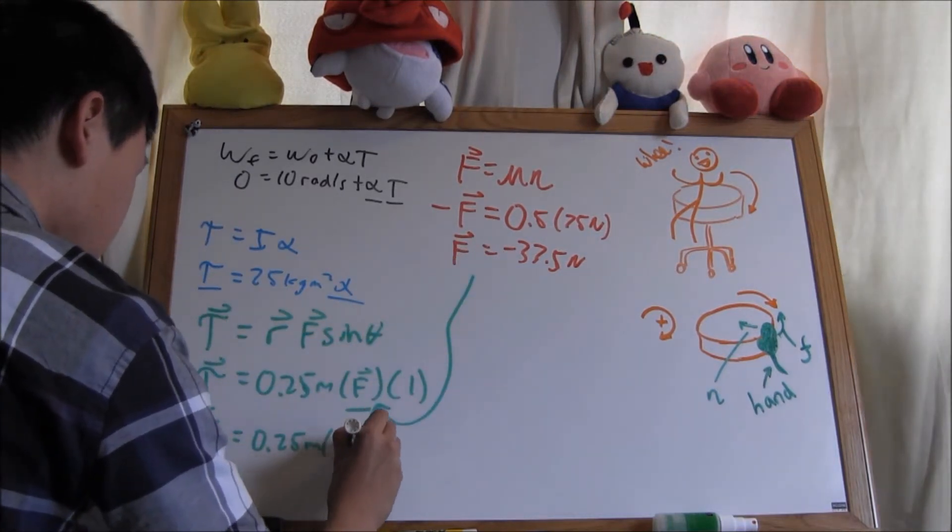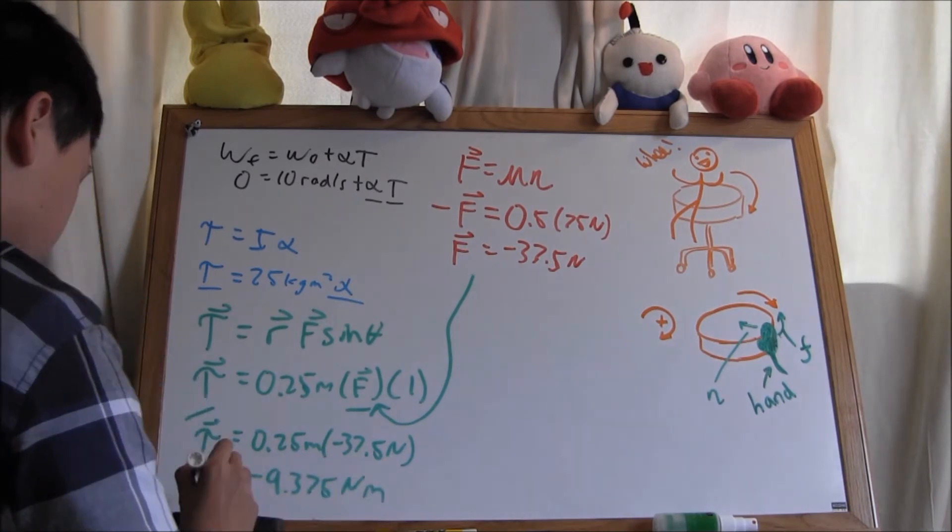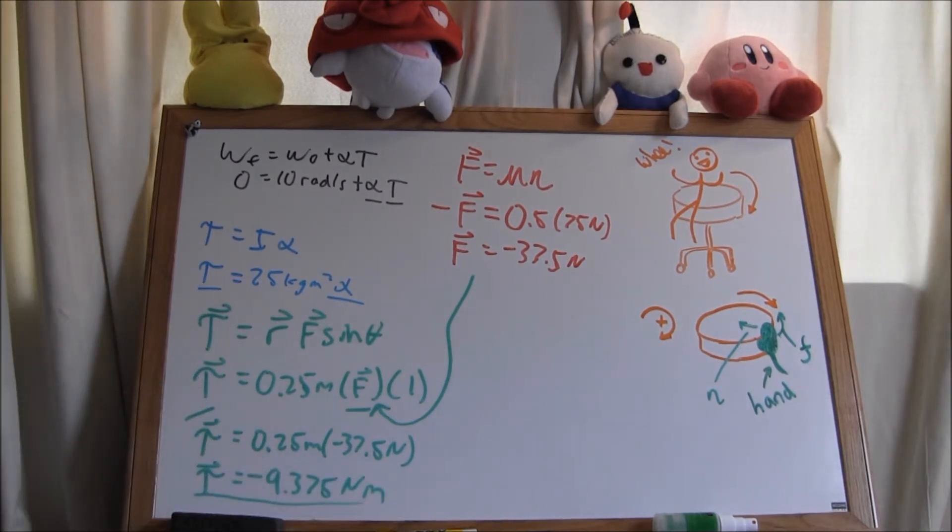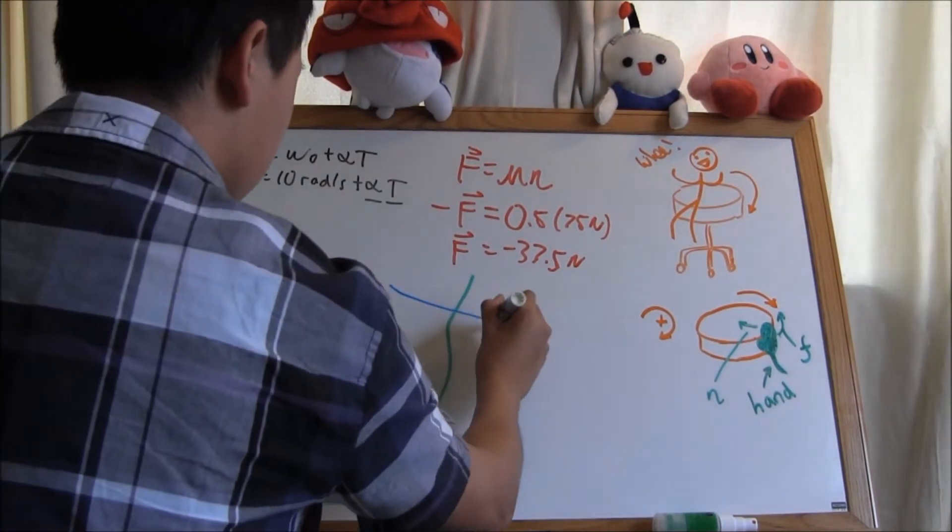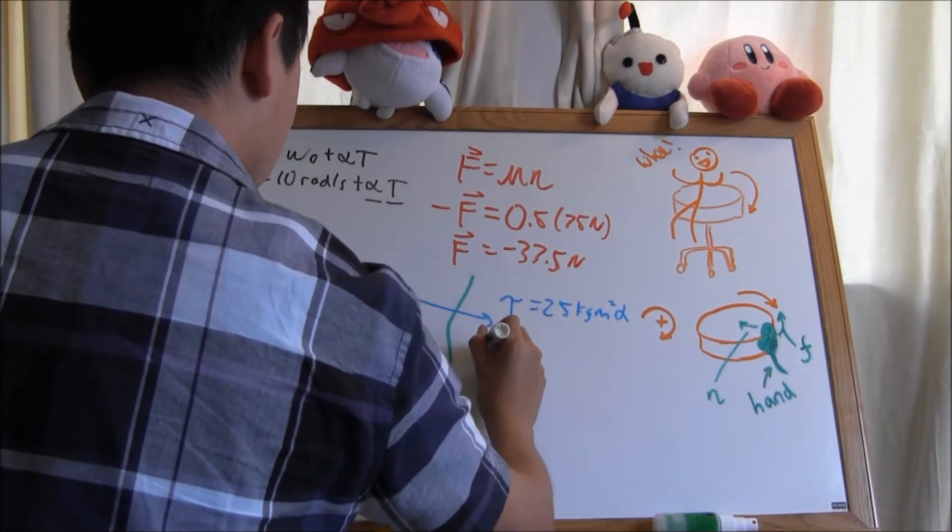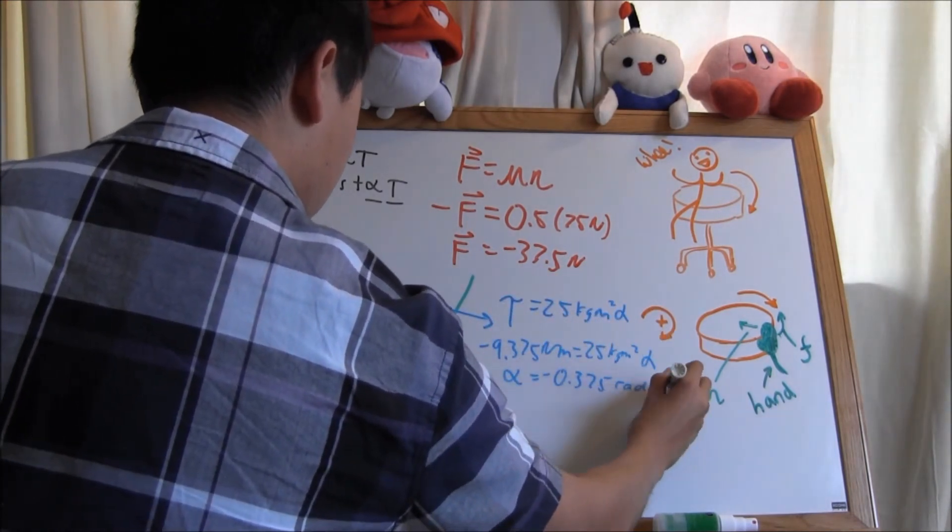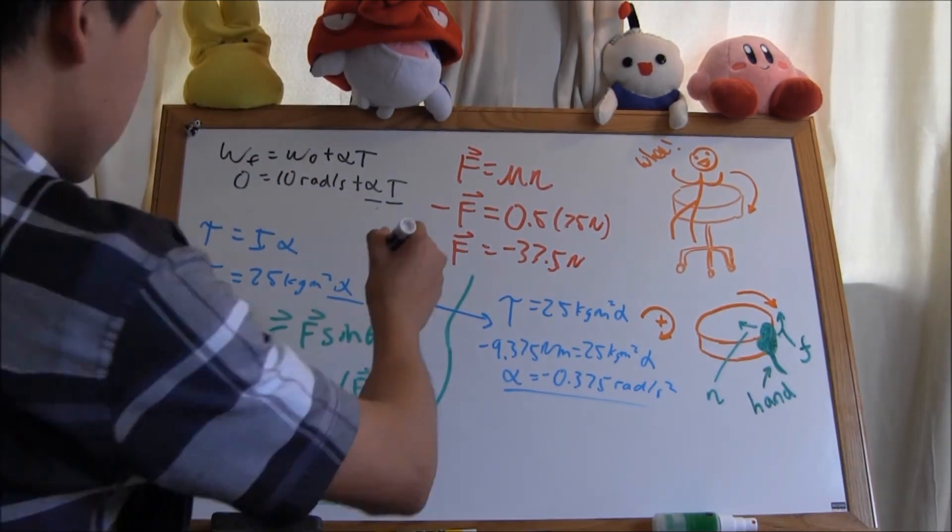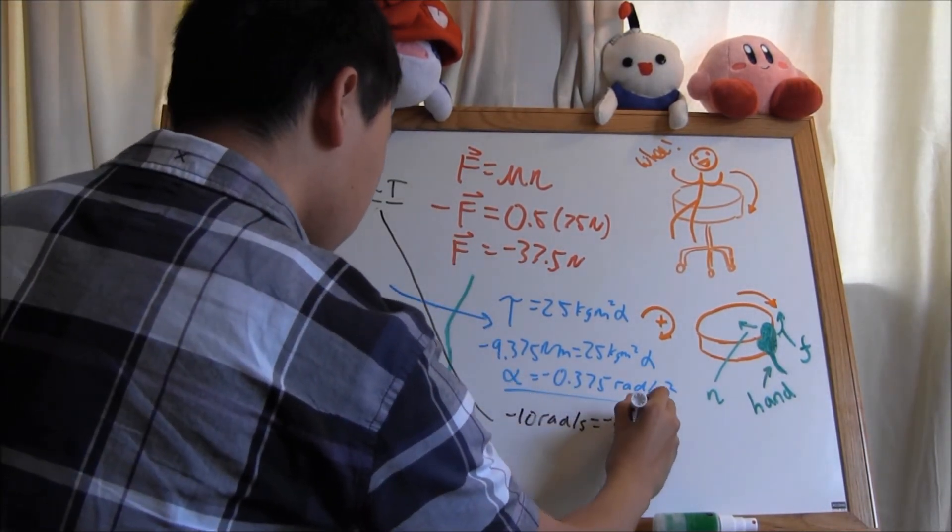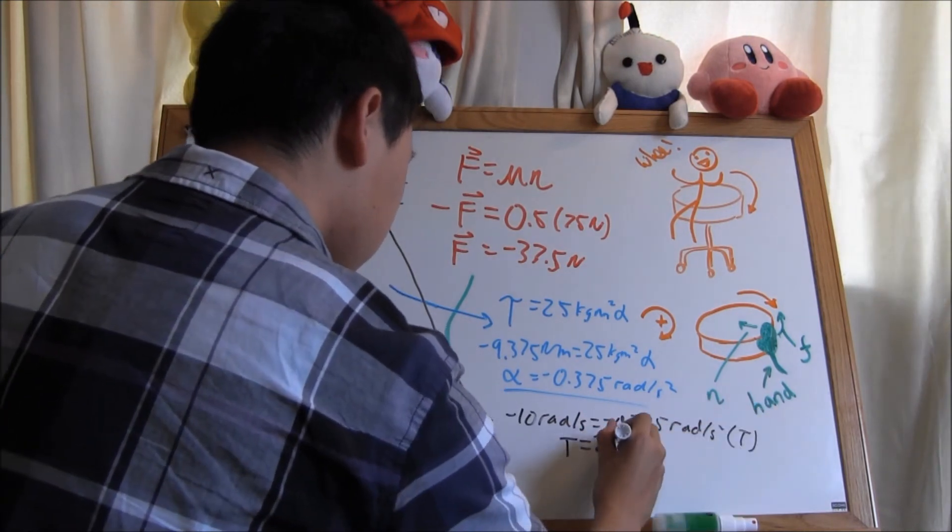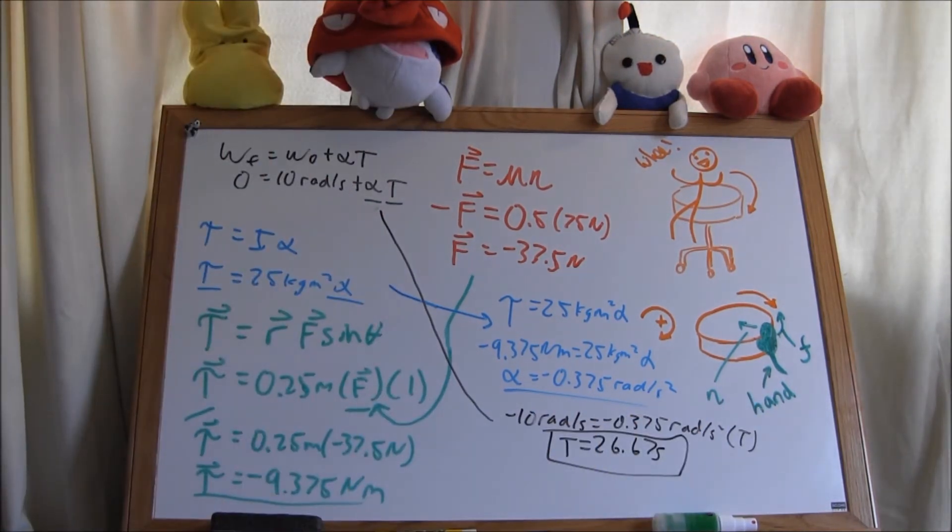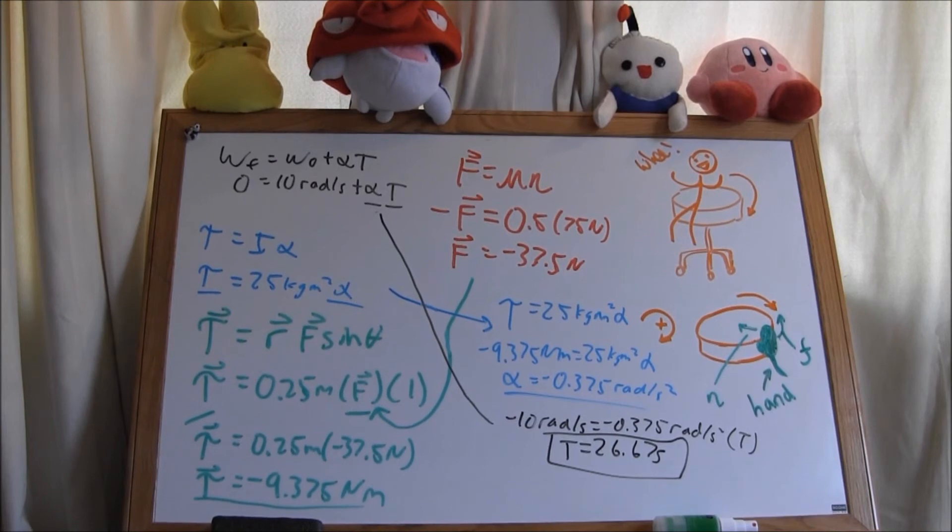Plugging in this force of friction into the green equation yields a torque of negative 9.375 newton meters. Then, plugging this torque into the blue equation gives an angular acceleration of negative 0.375 radians per second squared. Finally, going back to our initial rotational kinematics, we can plug in the angular acceleration and solve for time. The time it took for the chair to stop is 26.67 seconds.